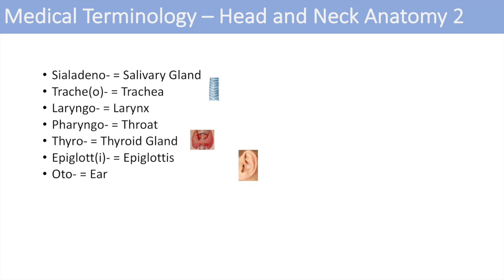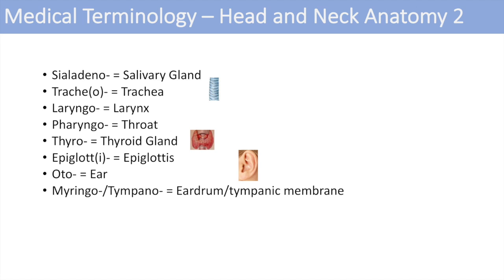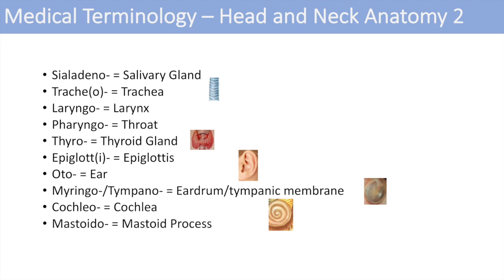The next one is oto, which stands for ear. You might have heard of otitis — inflammation of the ear — or otitis media, inflammation of the middle ear. The next one is myringio or tympano, both denoting the eardrum or tympanic membrane. Cochleo represents the cochlea, the snail-shaped portion of your inner ear involved in sound reception. Mastoido stands for the mastoid process, the bone behind your ear — mastoiditis is inflammation of the mastoid process and can be a sign of an ear infection.